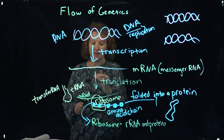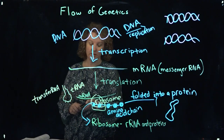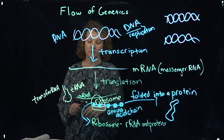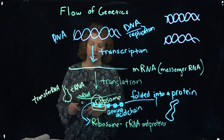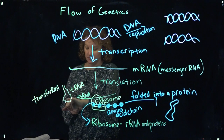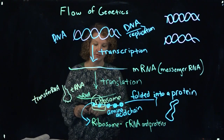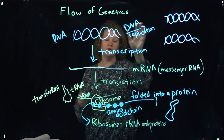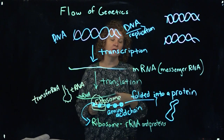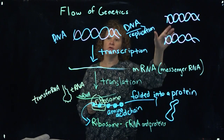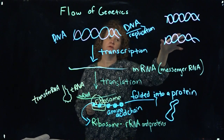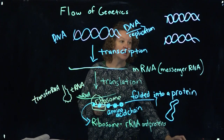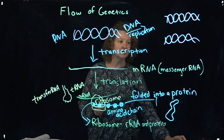The message is carried to the ribosome, where transfer RNA reads the messenger RNA in groups of three called codons — every three bases is a codon in messenger RNA — and brings over the appropriate amino acid. The other pathway is DNA replication during cell division, where you make identical copies through semi-conservative replication: DNA into two identical copies of DNA. Please contact me with any questions you may have.